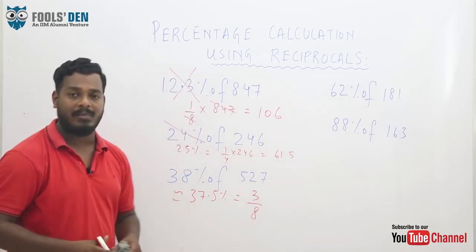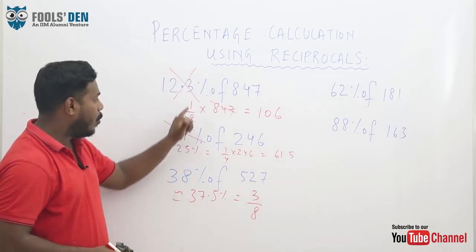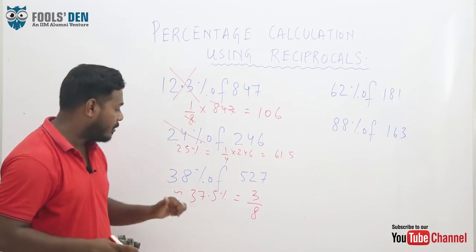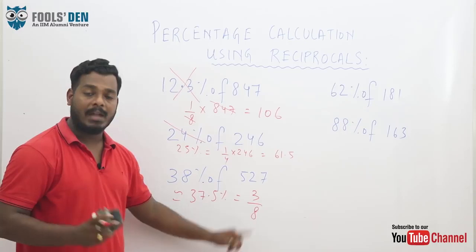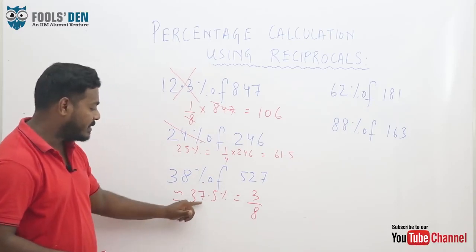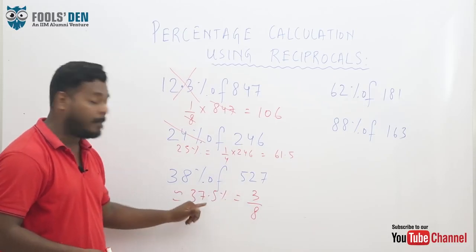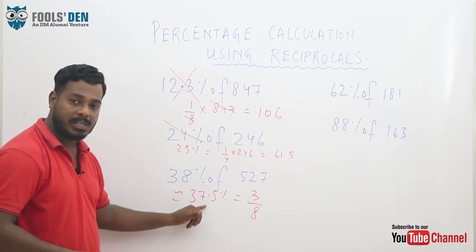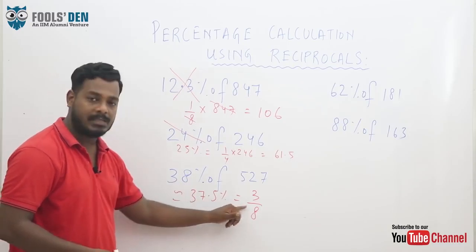Now, how did I arrive at this? We know 1 by 8 is 12.5. So 1 by 8 ka 3 times is 3 by 8 and 12.5 ka 3 times is 37.5. So 37.5 is 3 by 8. This is a very important value. You have to remember this for the exams.